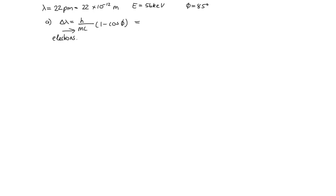Okay, so we can just substitute our values in. So h, that's 6.626 times 10 to the minus 34 joule seconds. The mass of the electron is equal to 9.109 times 10 to the minus 31 kilograms. The speed of light is 3 times 10 to the 8, and then we times this by 1 minus cos of 85.